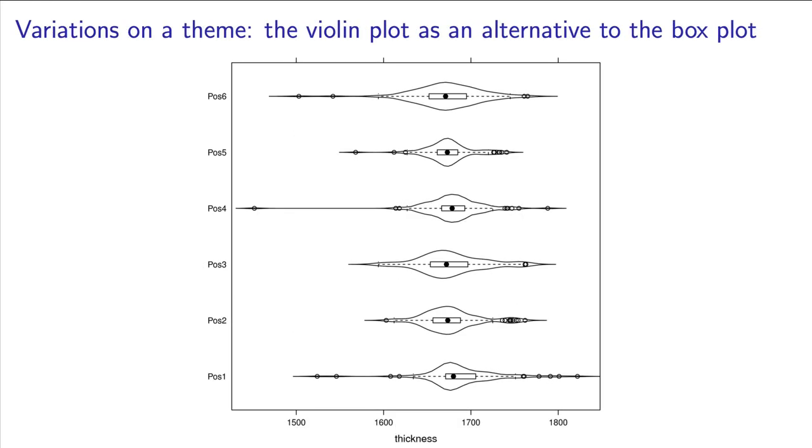As an assignment, we'd like you to look up and research the violin plot. It is a variation of the box plot that superimposes the histogram distribution of the data on top of the box plot.